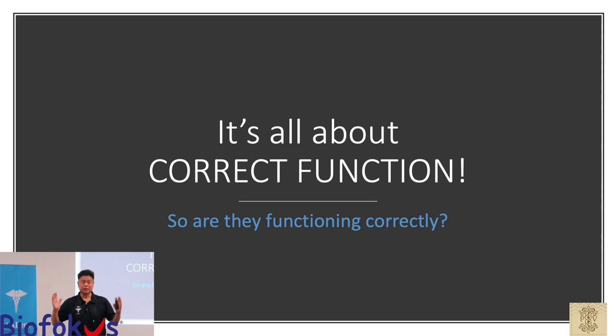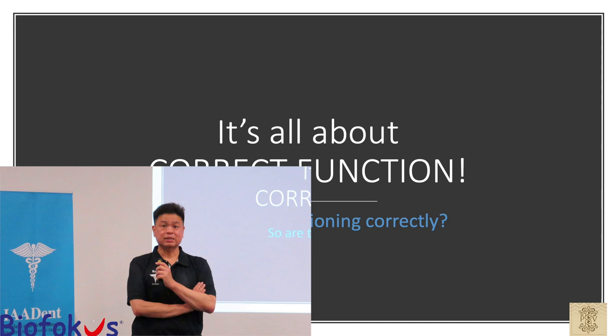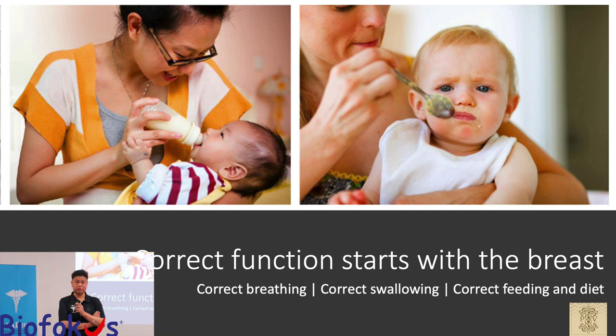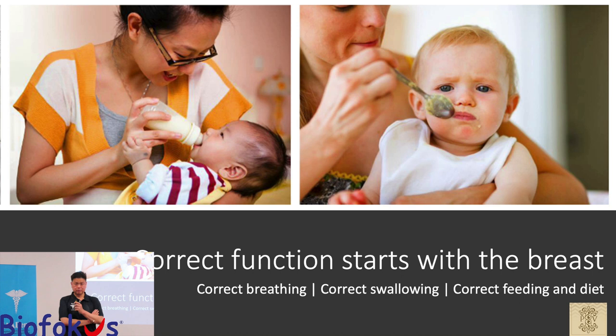Correct function can start as early as birth. Correct breastfeeding will help aid correct growth and development of the child's jaws and in turn will help teeth be in the right position to avoid possible malocclusions. Bottle feeding should be discouraged if possible because bottle feeding tends to change the swallow pattern of the baby, and as the swallow pattern changes, the muscular adaptation changes the size and shape of the jaws.